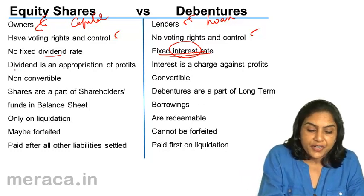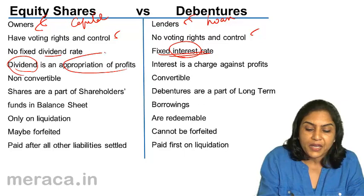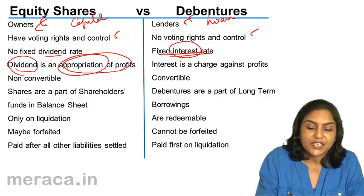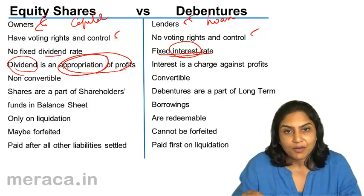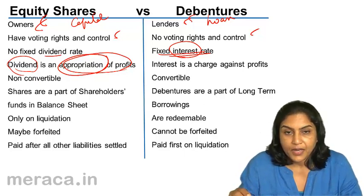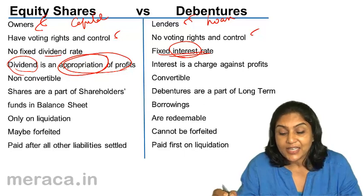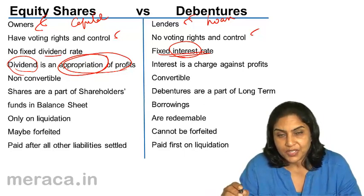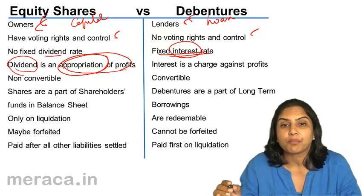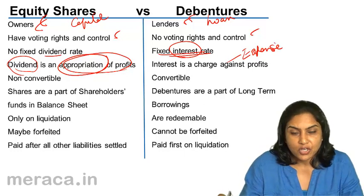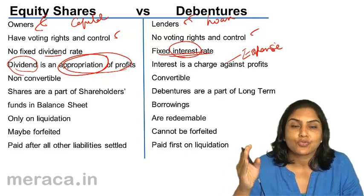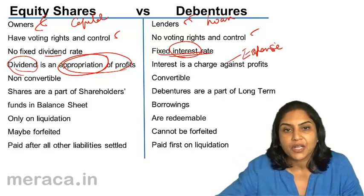Dividend, which is a return on shares, is an appropriation of profits — it's a distribution of profit. So dividend is paid only when there are profits. Interest, on the other hand, is a charge against profits. It is an expense, not an appropriation. So irrespective of whether there are profits or losses, interest has to be debited to the profit and loss account.